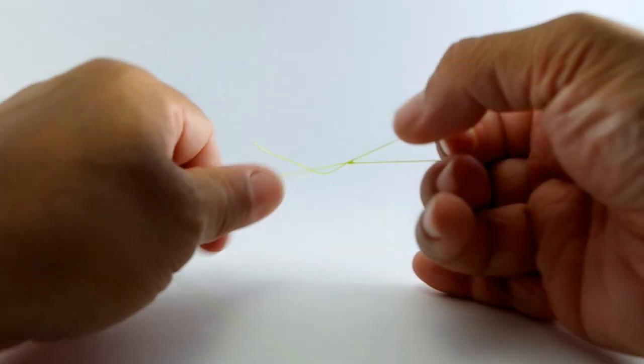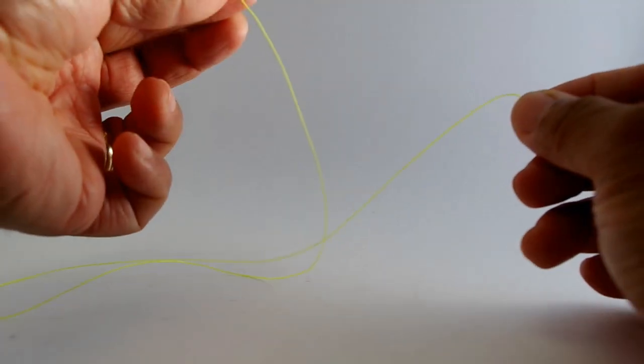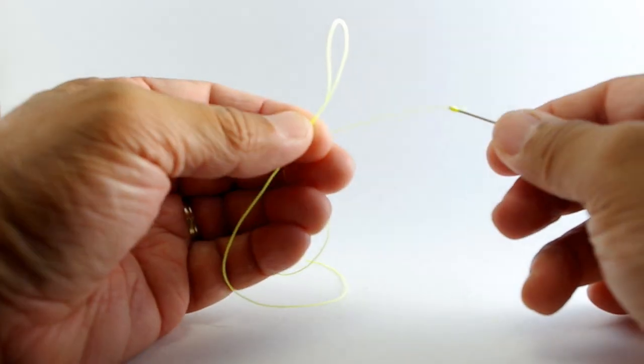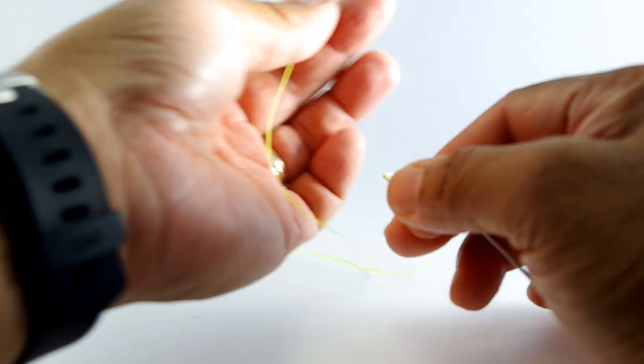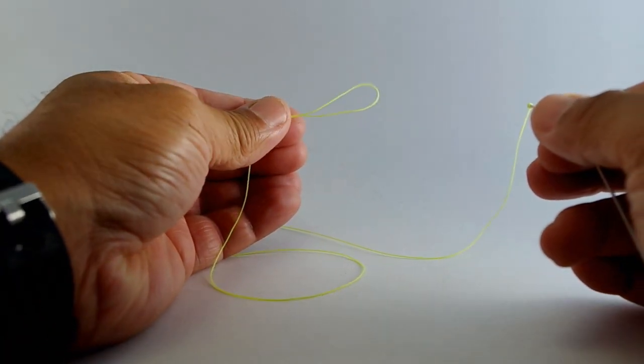Alright, we'll just cinch that up. And there we go. The end result is the line strike indicator, made of that Dacron fly line backing attached with a nail knot to your fly line. And then a perfection loop that'll provide the loop-to-loop connection that we use to attach to your leader itself.